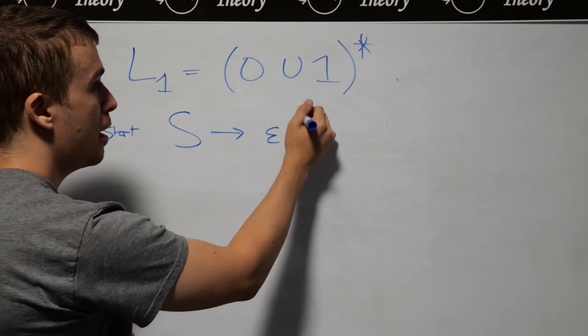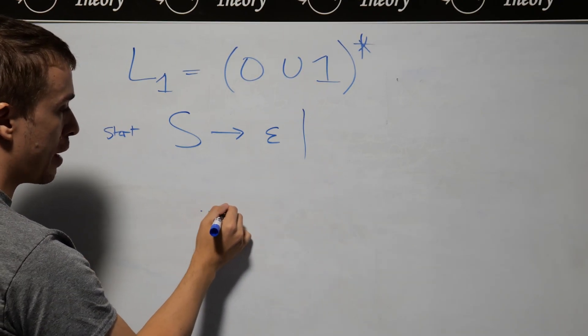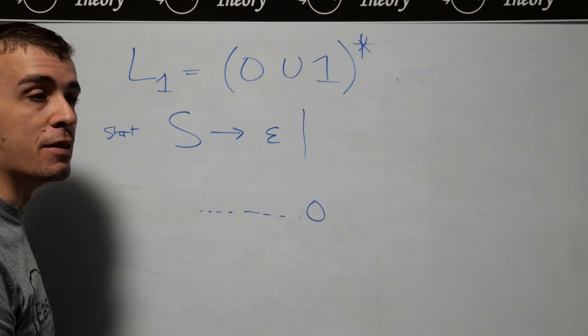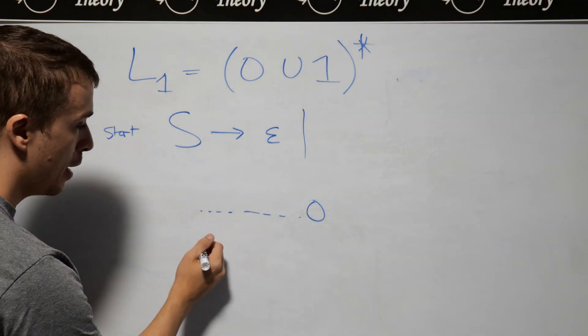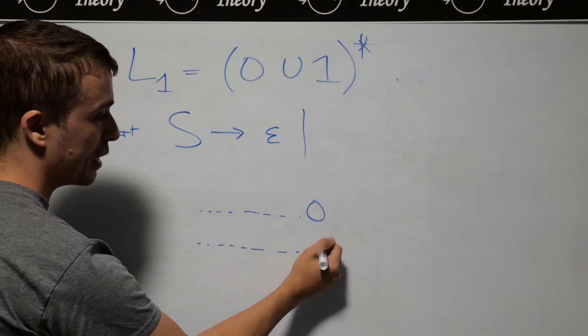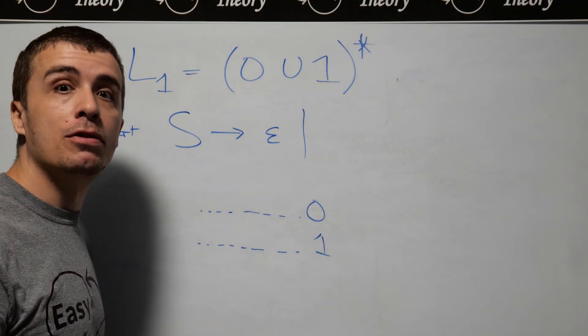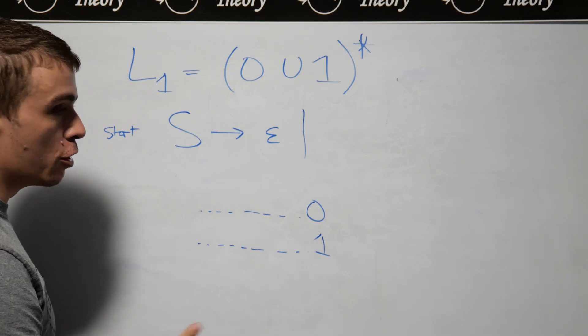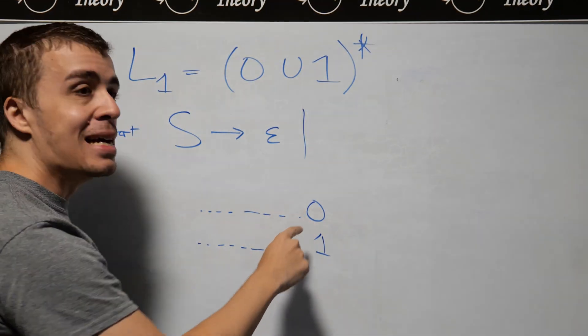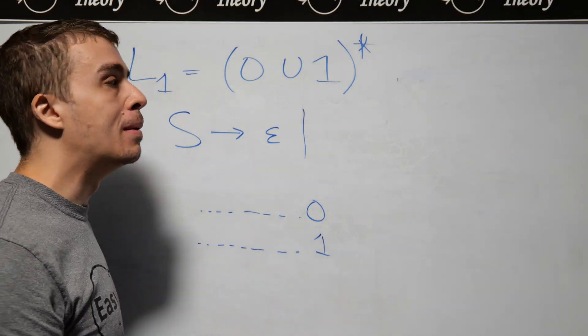But we also have that no matter what string that we have made so far, we can always add a zero on to the end of it. That's also a valid string, and any string that we've made so far, we may allow ourselves to add a one at the end. And no matter what string that we have, it's either empty, or it ends in a zero, or it ends in a one.